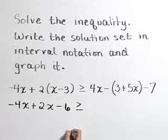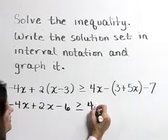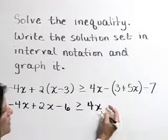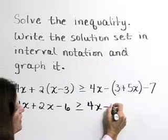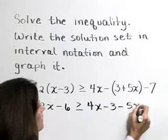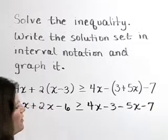That's greater than or equal to, on the right-hand side, we have 4x. Distributing our minus sign into the parentheses gives us a minus 3 and a minus 5x minus 7.